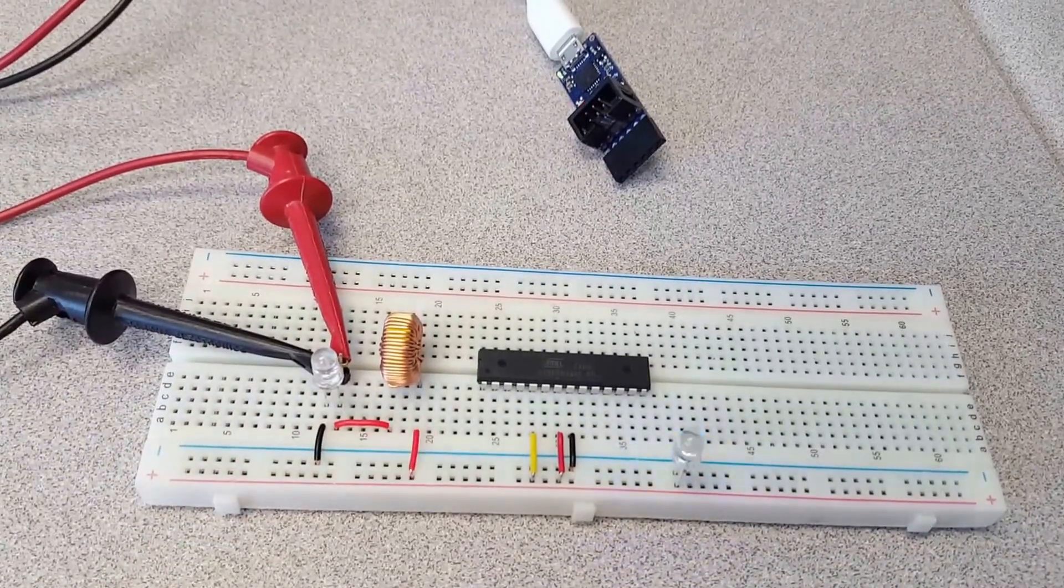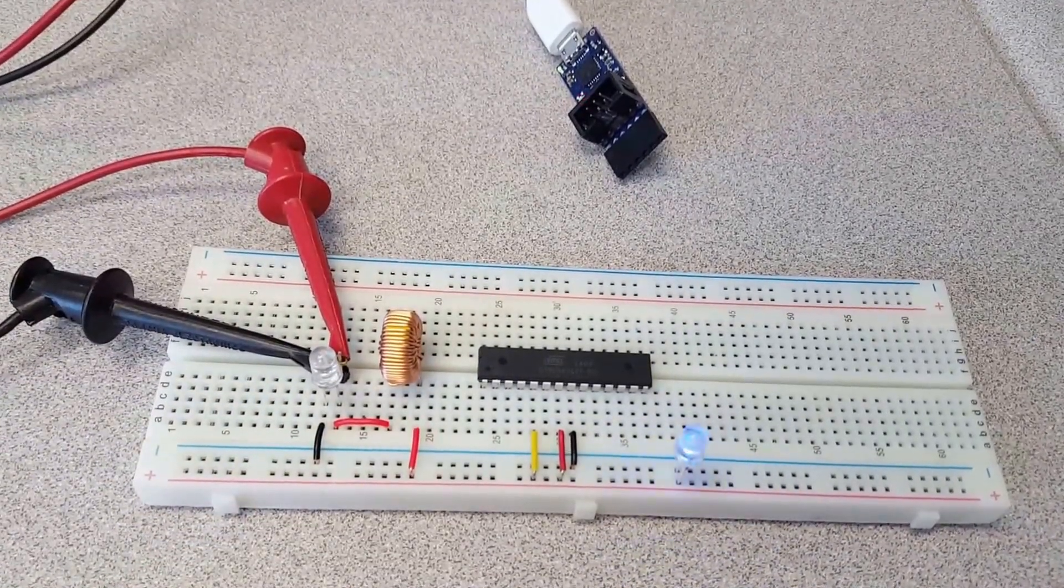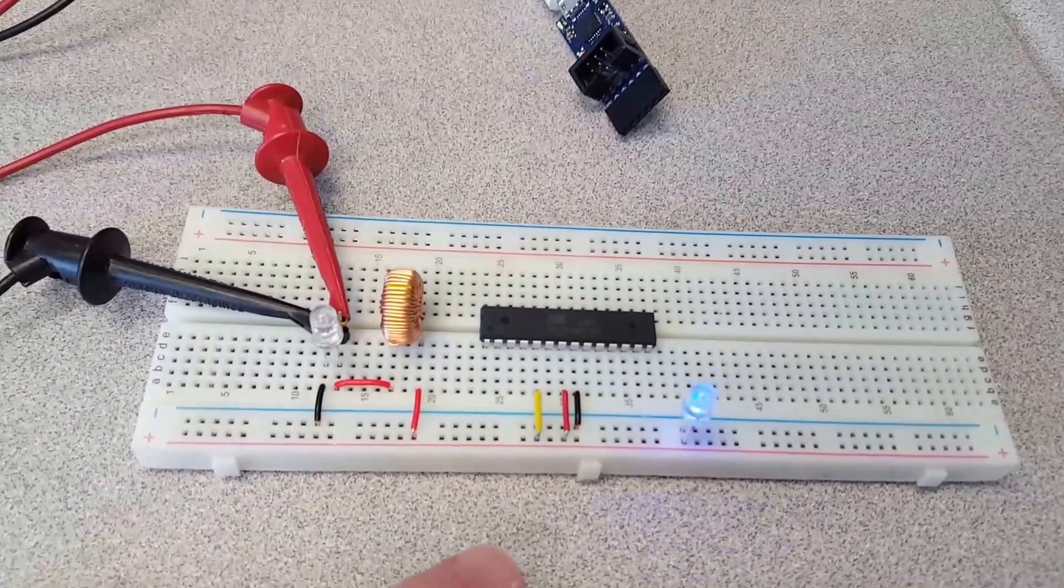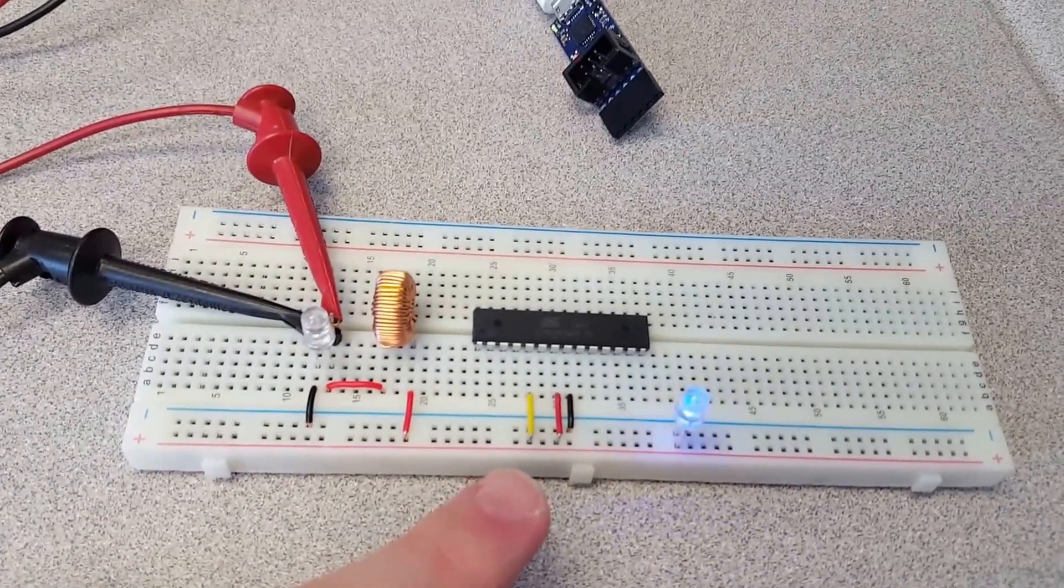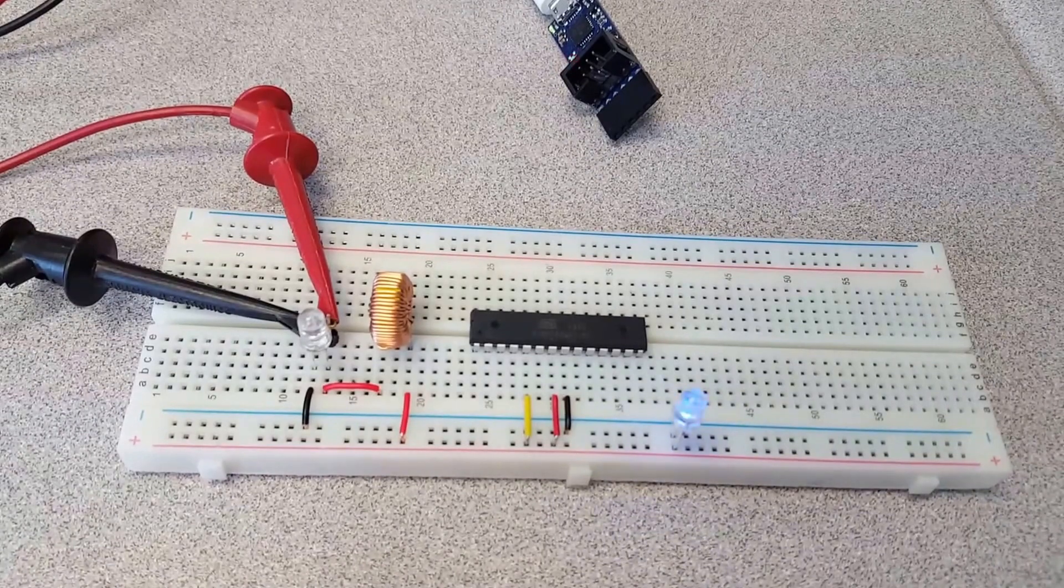The power goes through a 100 microhenry inductor, and then it goes to power an AVR ATmega328p. The AVR has a yellow wire that connects one of its I.O. lines to VCC.